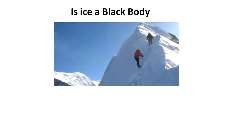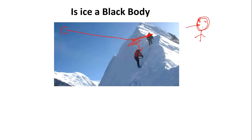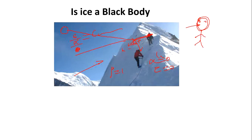Is ice a black body? Yes, ice is a black body. Why? Because for mountain climbers, heat from the sun falls directly on the mountain which is white in color. Because it is white, everything is reflected back — no transmission, no absorption. Everything is reflected back and falls on the mountain climber's face, making it black. This shows that a white-colored body has absorption equal to 0, transmission equal to 0, and reflection equal to 1. The ratio alpha divided by epsilon is constant, which is why ice is called a black body.